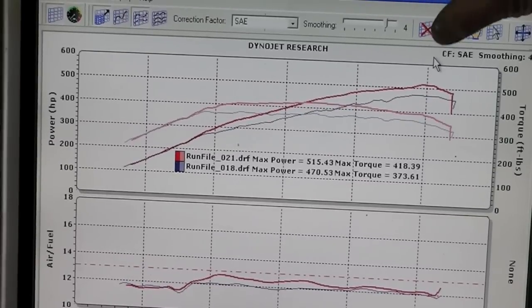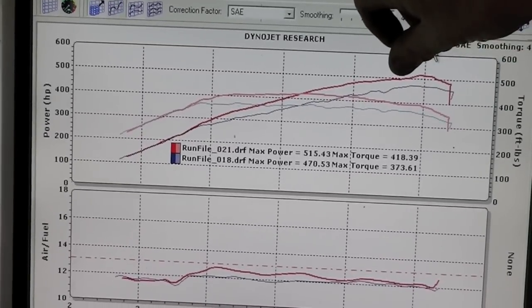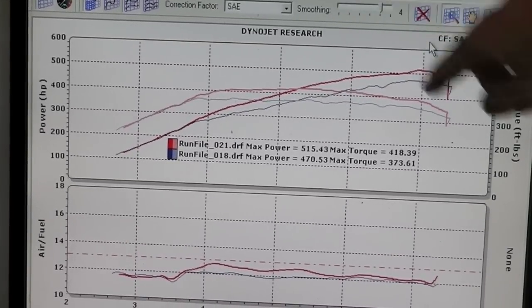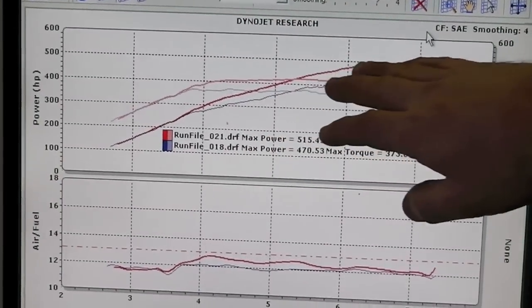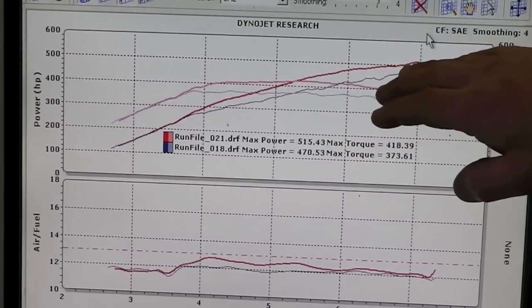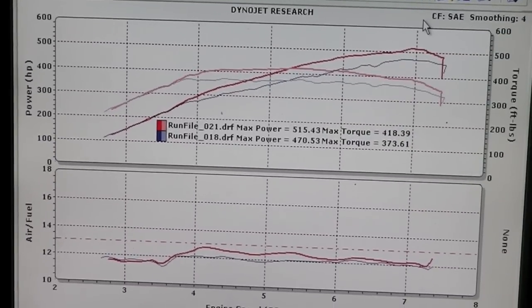We're running very little manifold pressure. This is about 0.7 bar and the thing that is really amazing is that the car is requesting a decent amount of timing.